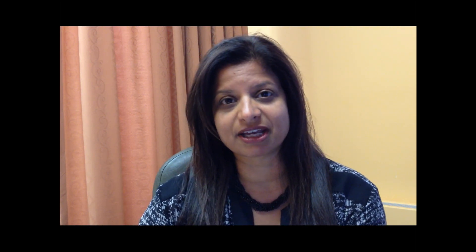When we think about biologic plausibility, it is conceivable that it is related to systemic inflammation. We know that active systemic inflammation is associated with increased TNF-alpha levels as well as endothelial activation. Together, this can lead to an increase in tissue factor, decreased protein C, and platelet activation, together leading to a pro-coagulable state.